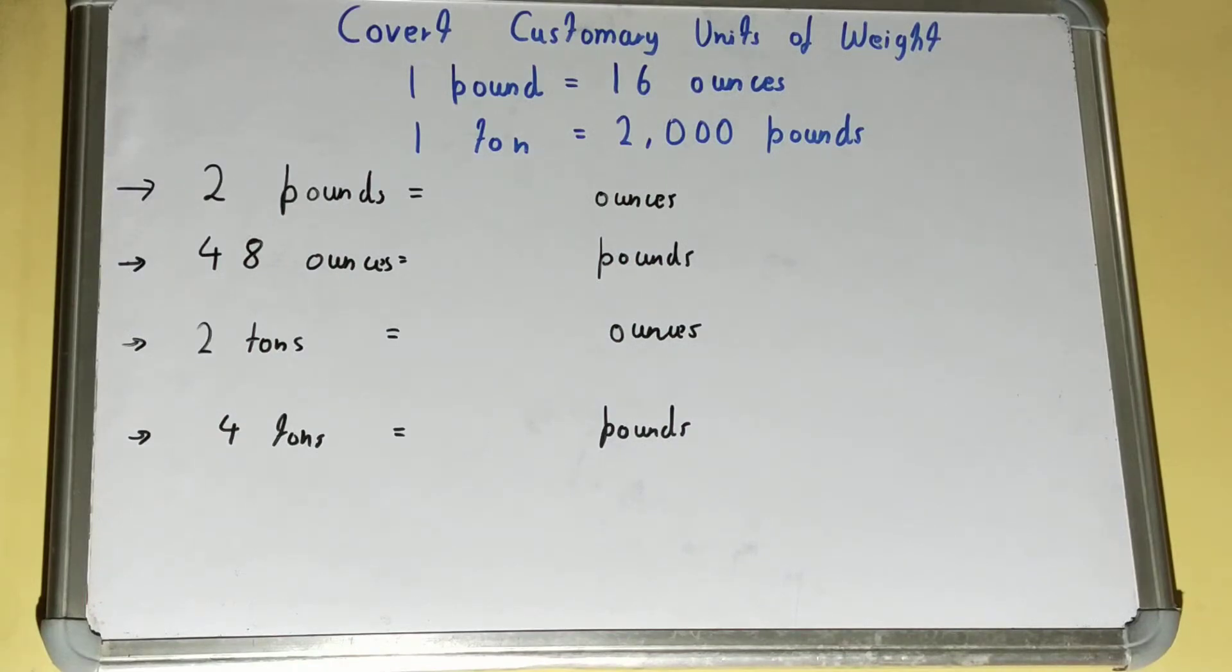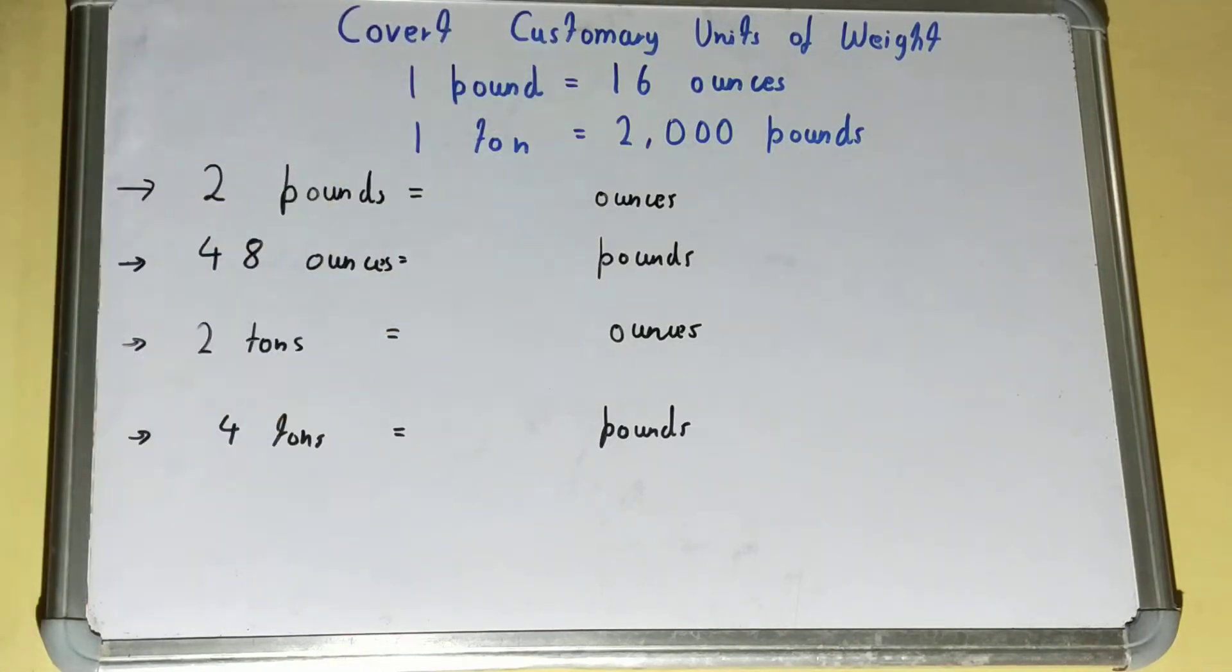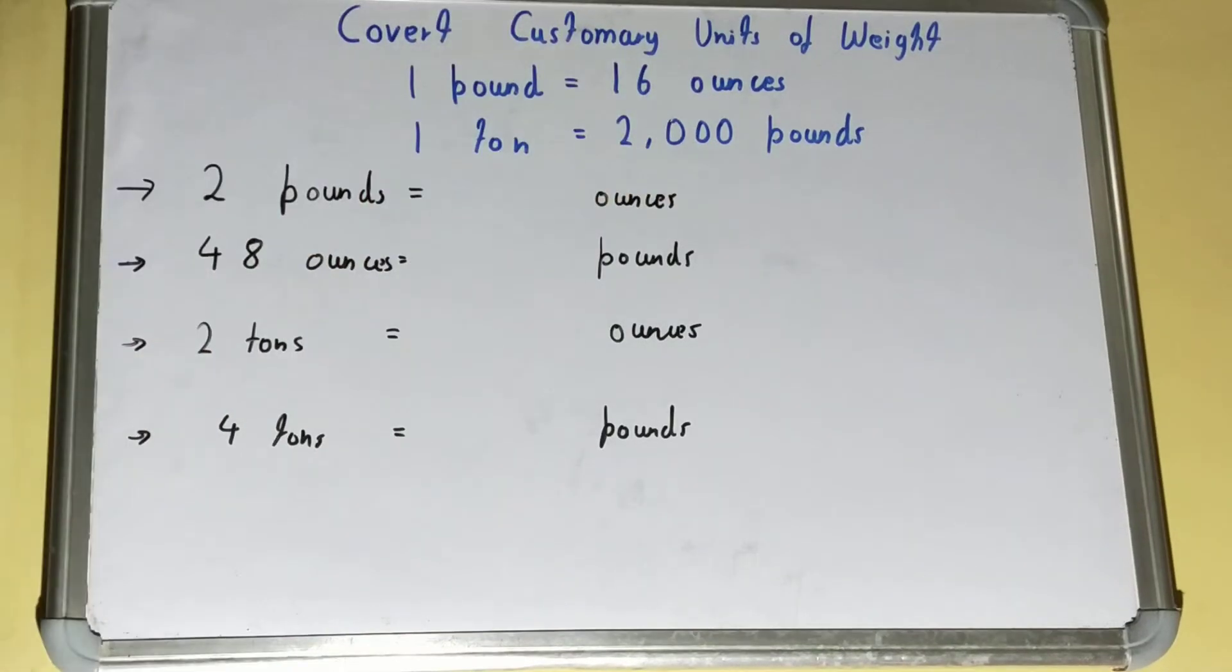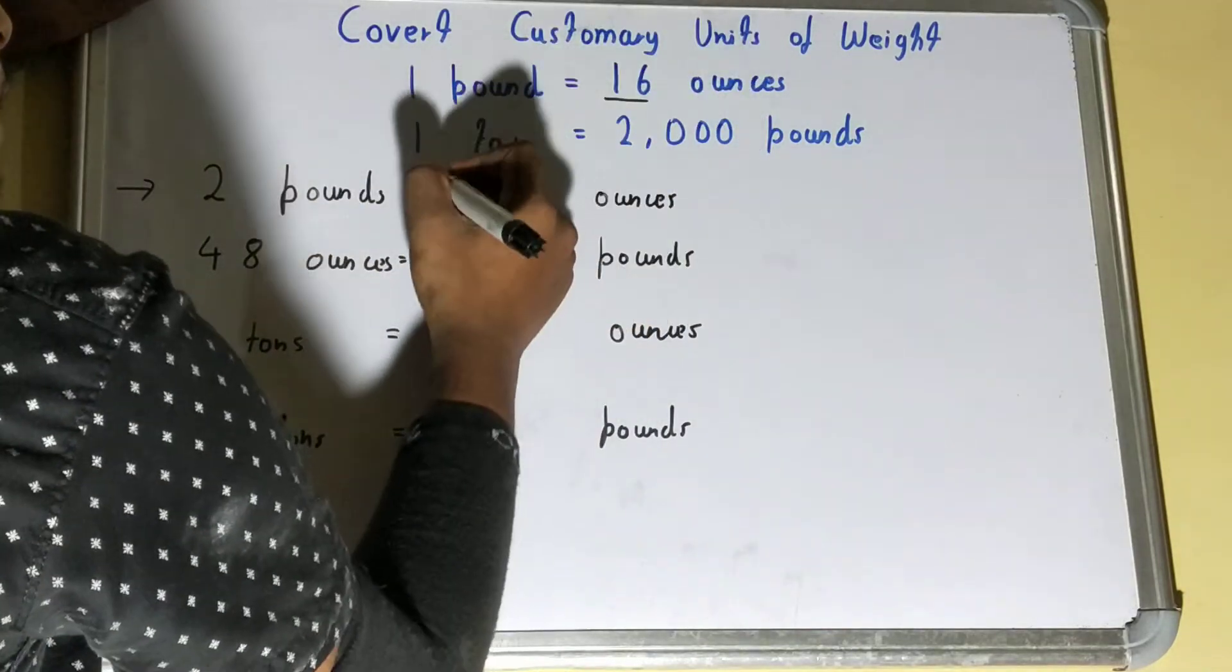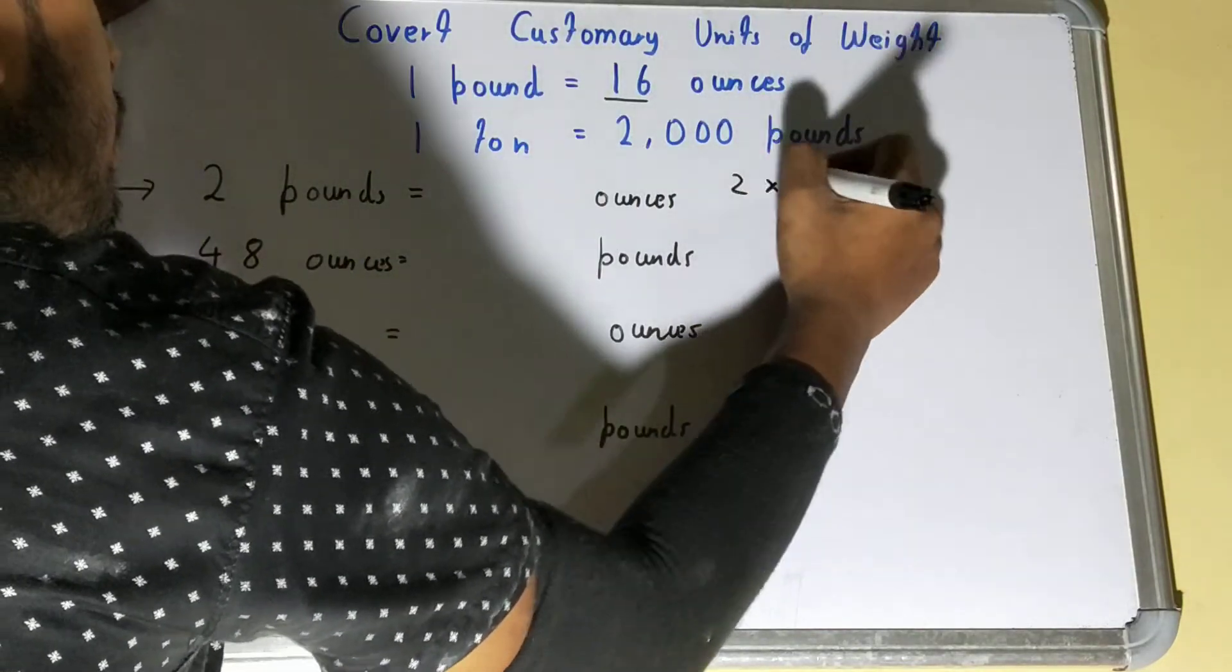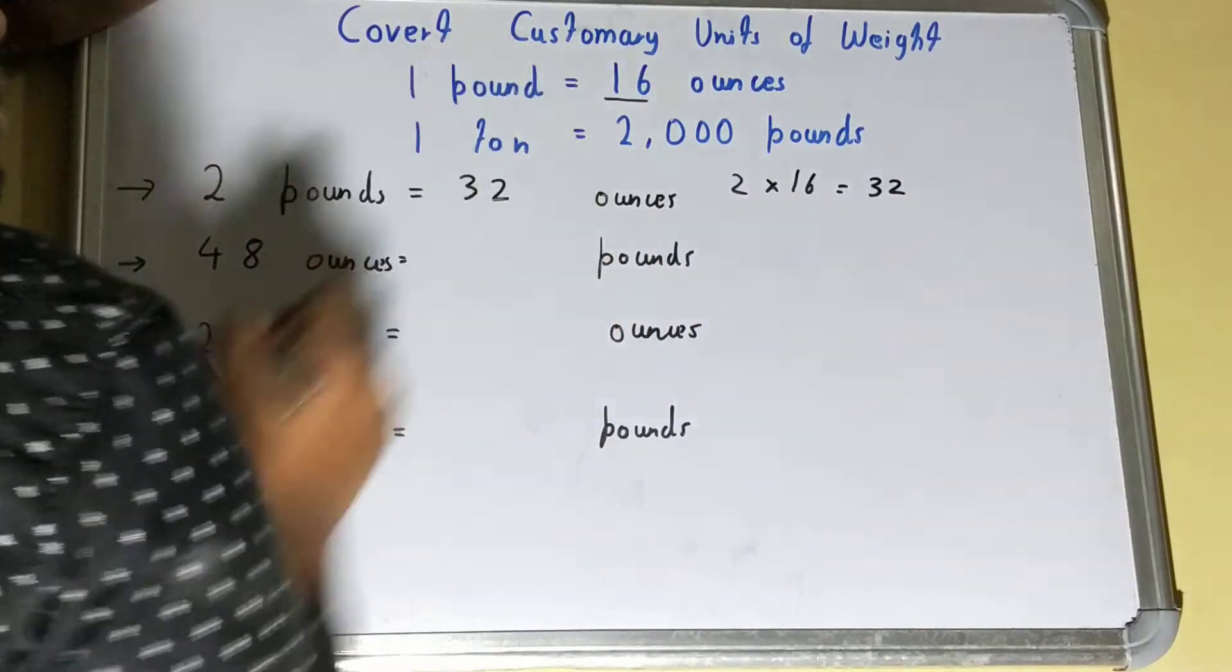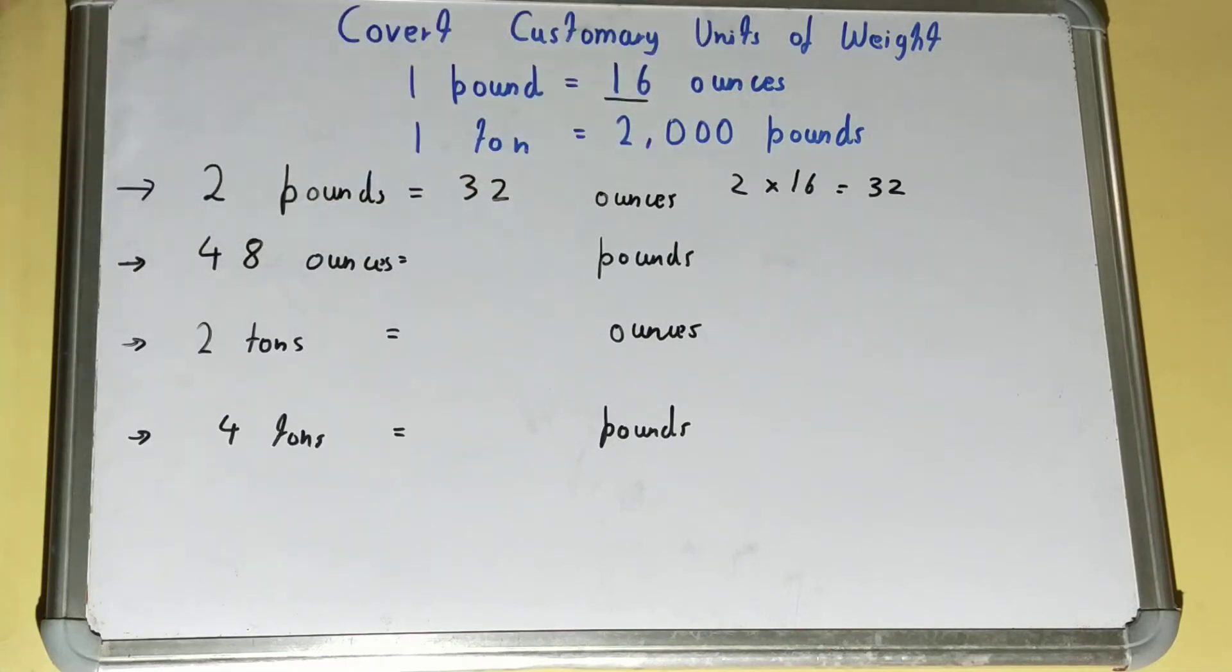Now let's go on to the conversions. We have to convert 2 pounds into ounces. If we see, one pound is 16 ounces, so what we'll do is multiply with this value: 2 times 16, which will give us 32, so it will become 32 ounces. You need to see the equivalent one unit for that and multiply it.